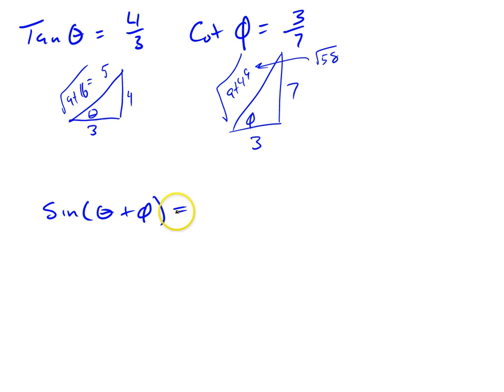The sine of a sum identity says this is the sine of theta times the cosine of phi plus the cosine of theta times the sine of phi. Now, just grab all the pieces you need here.